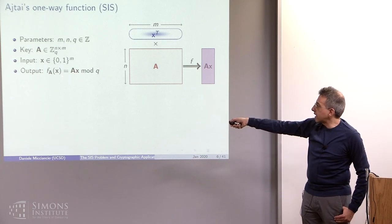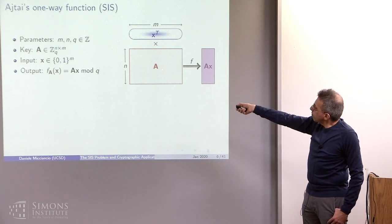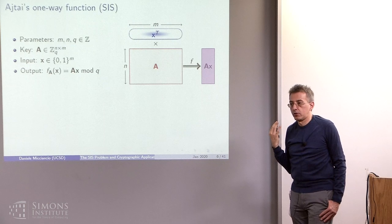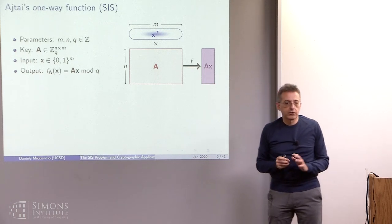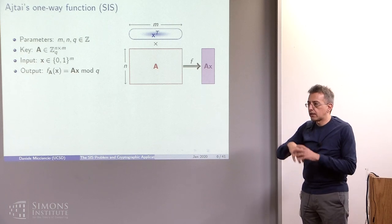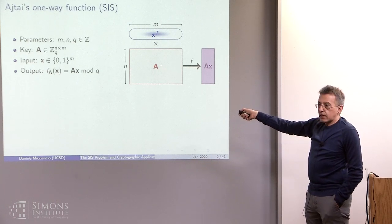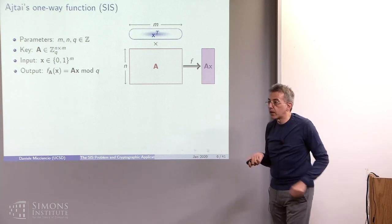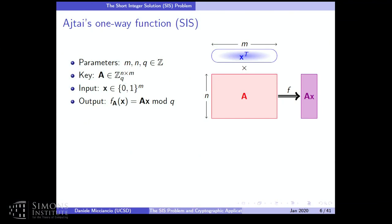The function is very simple — it is just a linear function that takes an input vector x and outputs A times x modulo q. For arbitrary inputs, this function is very easy to invert — you can find a pre-image by just solving a system of linear equations. What makes the problem hard is that the function is defined on a set of small vectors — for concreteness, binary vectors in {0,1}^m. Using linear algebra, you will be able to find a pre-image of the target, but it will not be a short one in general. So it is not in the domain, and that's not solving the inversion problem. The function is computed modulo q, A is a matrix modulo q, so everything is reduced modulo q.